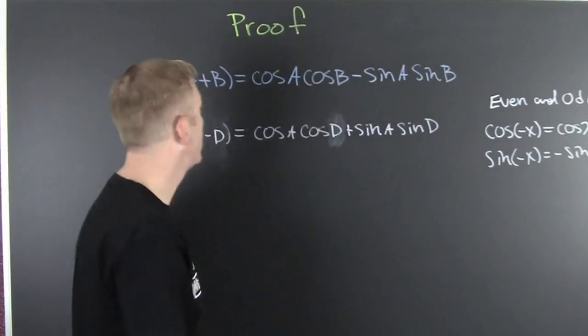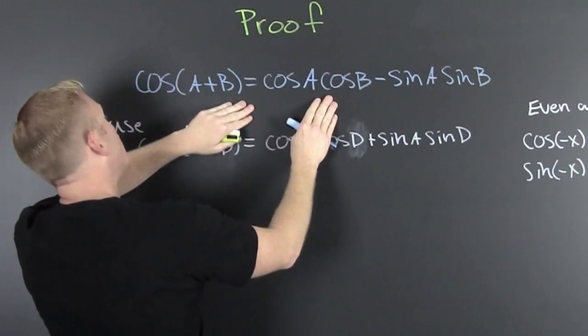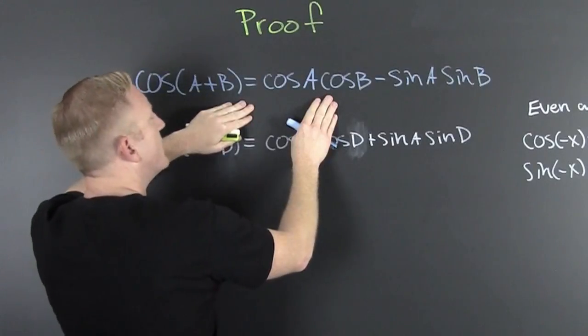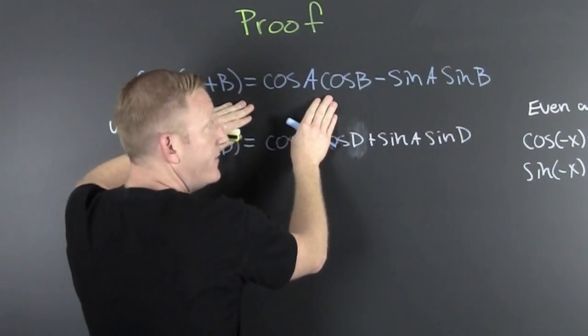What am I talking about? We're trying to prove this guy. That the cosine of A plus B is the cosine of A cosine of B minus the sine of A sine of B.